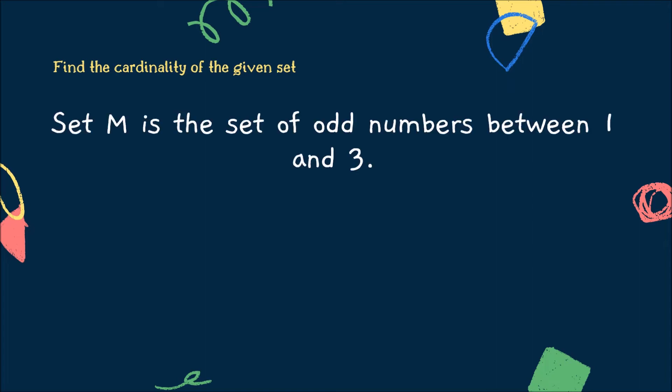Now, let's have the last example. Find the cardinality of the given set. Set M is the set of odd numbers between 1 and 3. This is a null set because the only number between 1 and 3 is 2, and 2 is not an odd number. Thus, the cardinal number of this set is equal to 0.